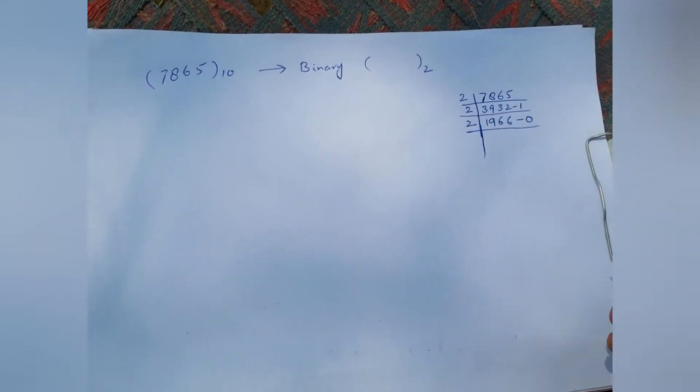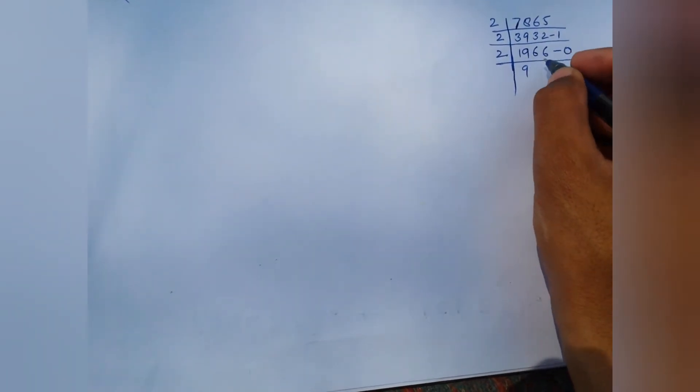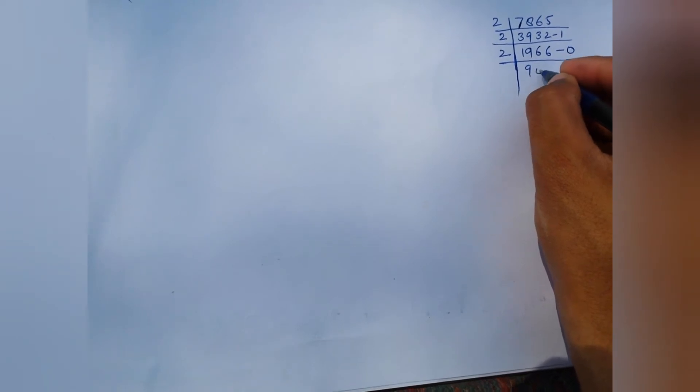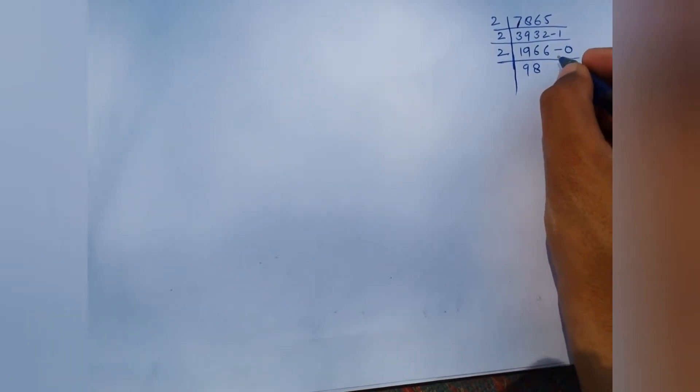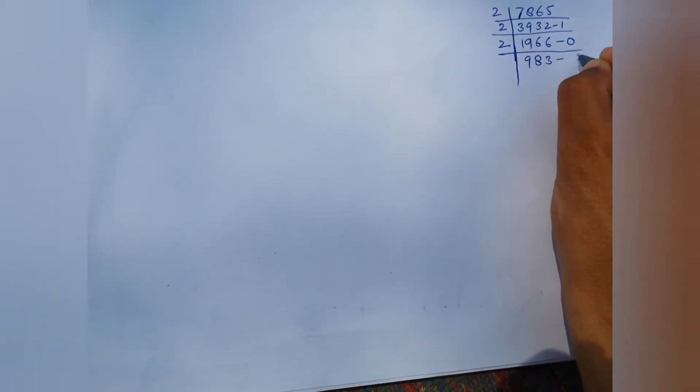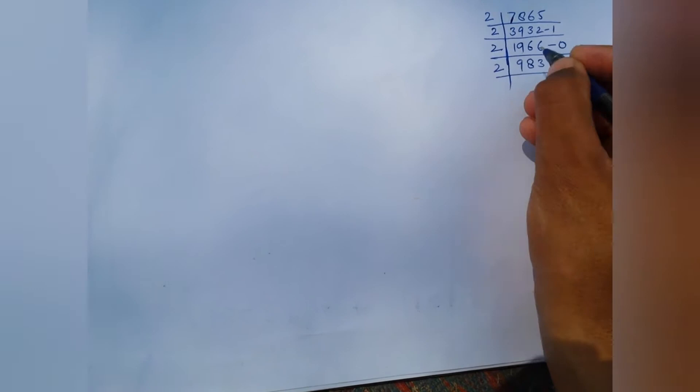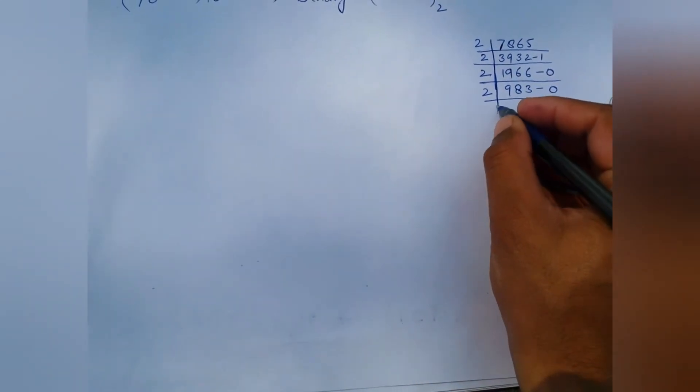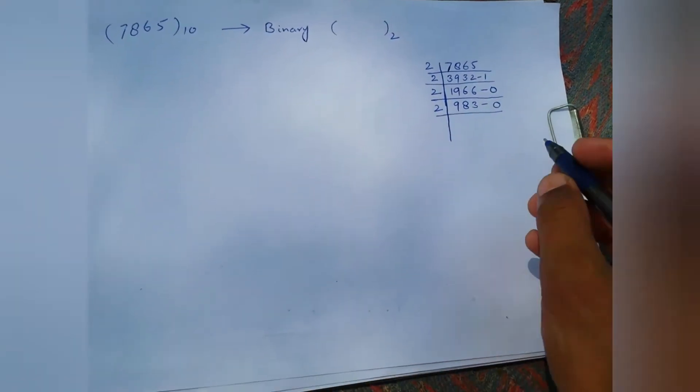The remainder is zero, so we write zero on the right side of our answer. Then we divide by two and we obtain 983, and the remainder is zero. Always remember that we always write our remainder on the right side of our answer.